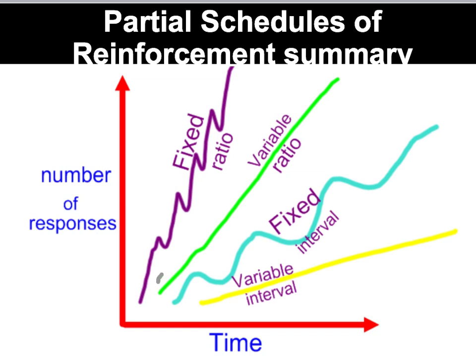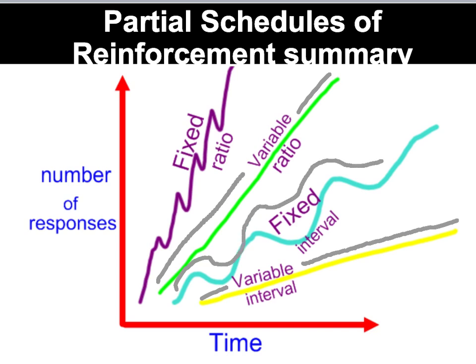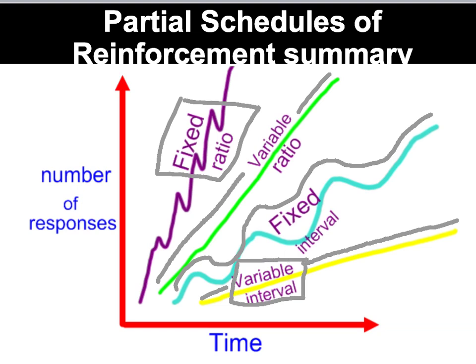So in summary, the two variable schedules provide a steady response rate because of the unpredictability of the timing of the reinforcer. The two fixed schedules provide an erratic response rate because the timing of the reinforcer is predictable. Fixed ratio provides the fastest response rate and variable interval provides the slowest response rate. Variable schedules are more resistant to extinction — they're harder to extinguish — because of the unpredictability, and thus the two fixed schedules are easier to extinguish.